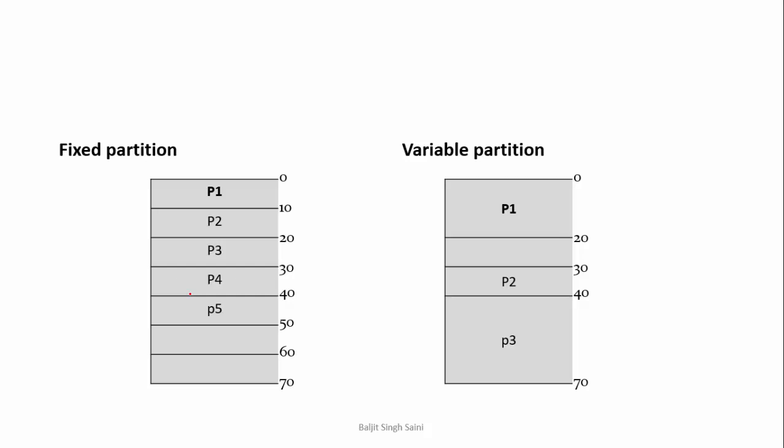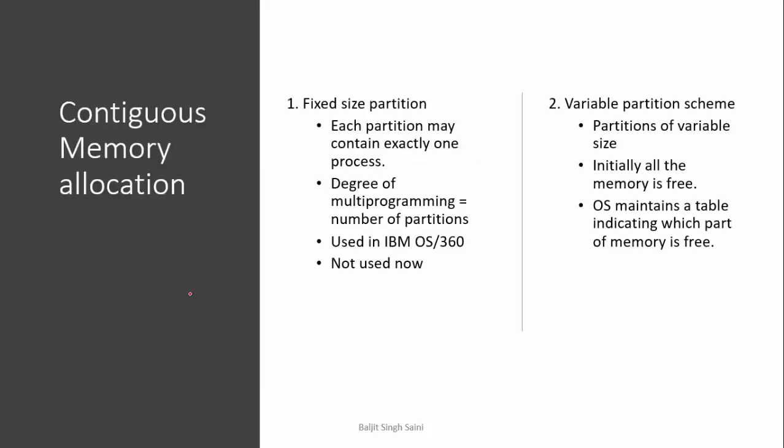In this example, there are seven slots, each 10 MB. This means I can have a maximum of seven processes only in this system. Each process maximum size can be 10 MB because the slot size is 10 MB. The degree of multiprogramming will be equal to the number of partitions in the system. One example OS which used fixed size partition was IBM OS 360, but this is no more used nowadays in current systems.